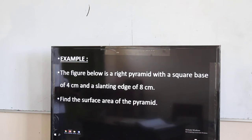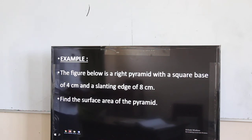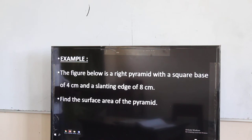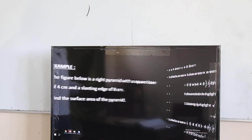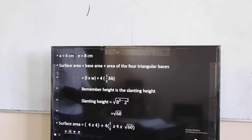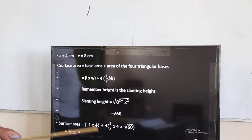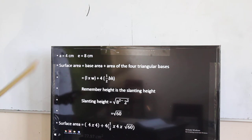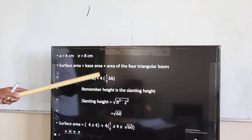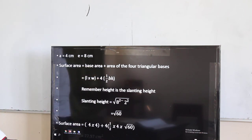So for the example we are talking about — the figure below is a right pyramid with a square base of 4 centimeters. You are trying to find the surface area of the pyramid. You start with the area of the base — the area of the base is given by side multiplied by side. The other triangles are going to be 4 times a half times base times height. Remember, the height here is the slanting height.